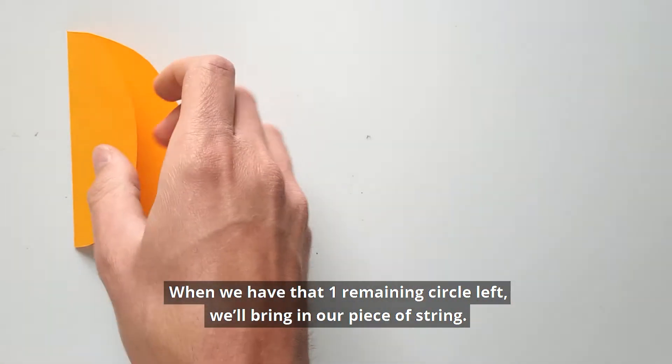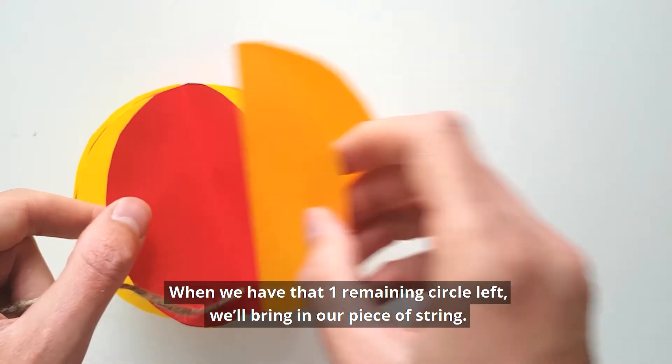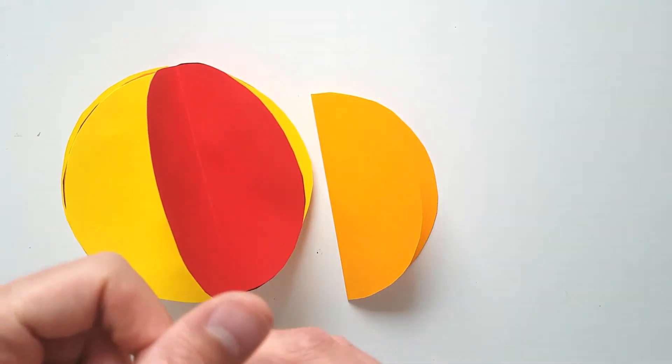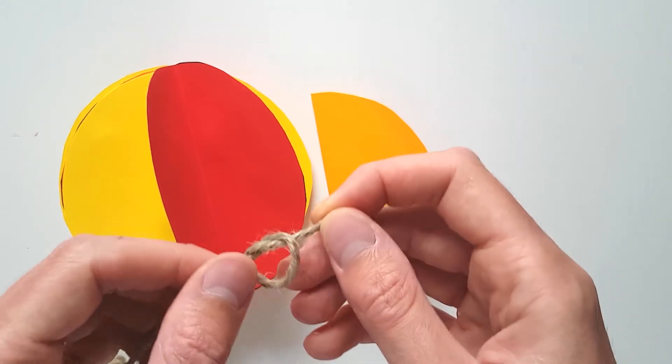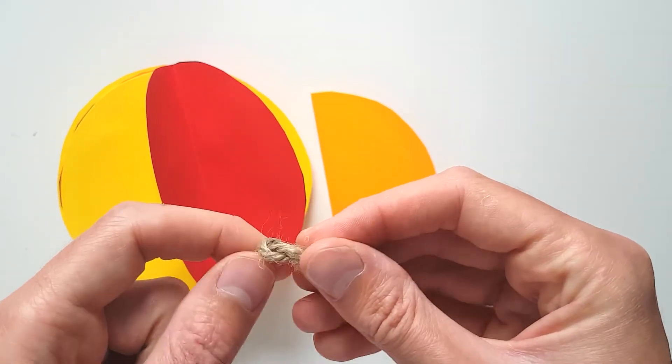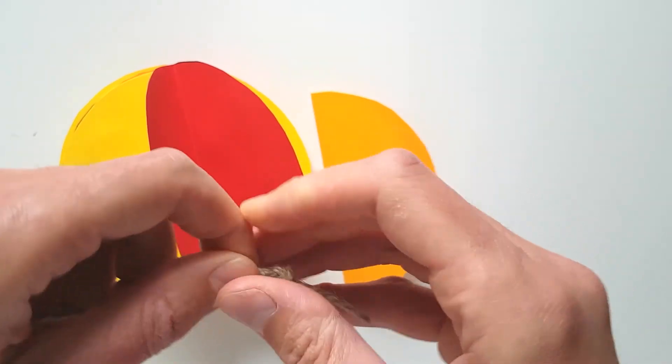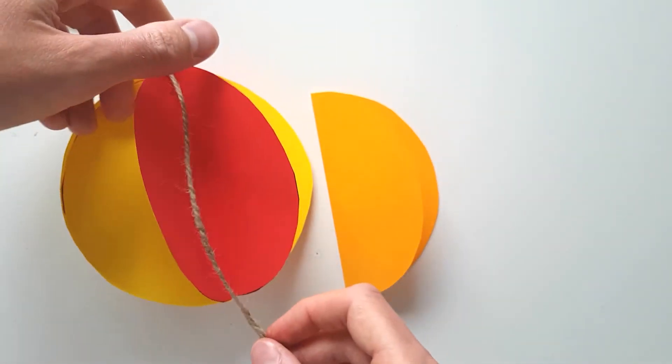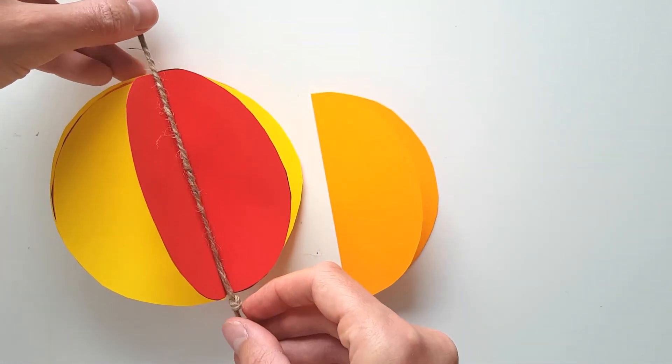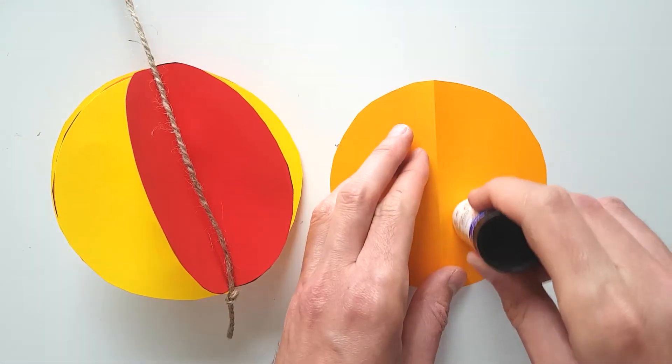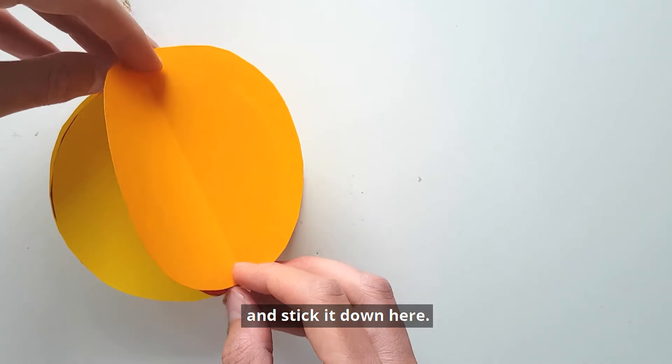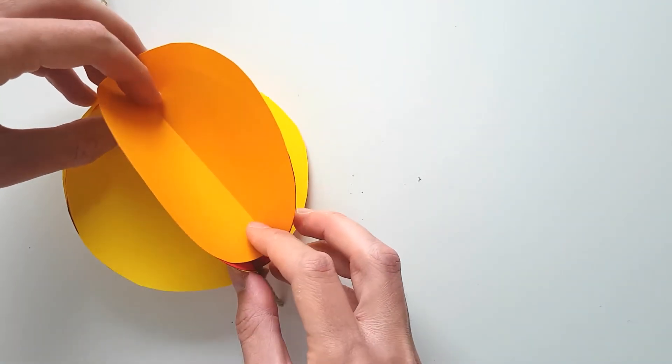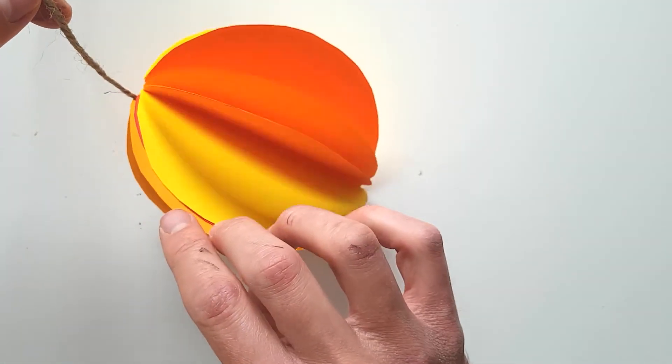When we have that one remaining circle left, we'll bring in our piece of string. We'll make a little knot at the end of the string and lay it down here. Then we'll glue both sides of the last circle and stick it down here. Excellent, we have our Sun.